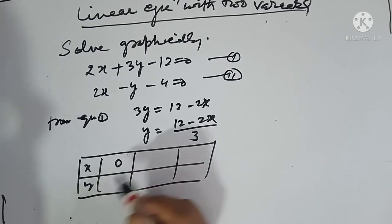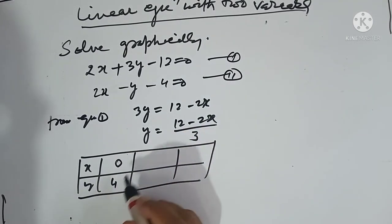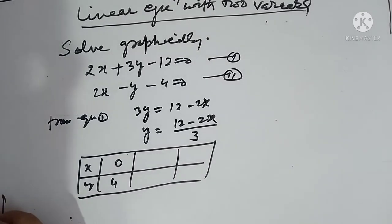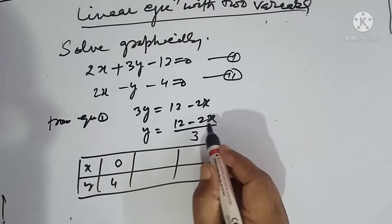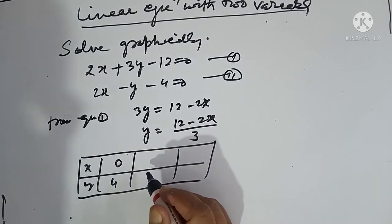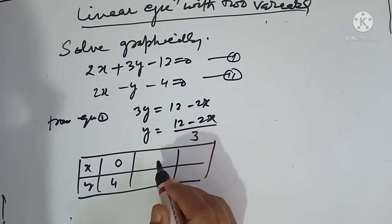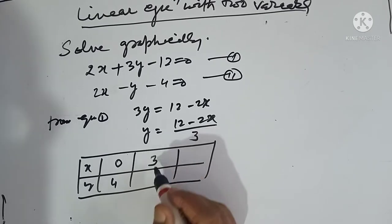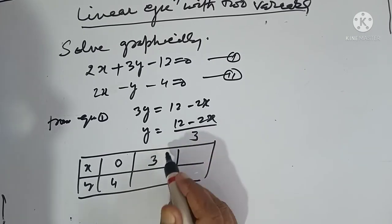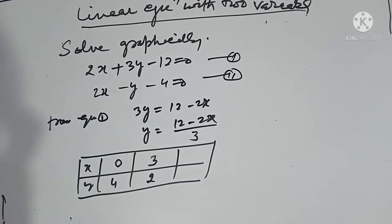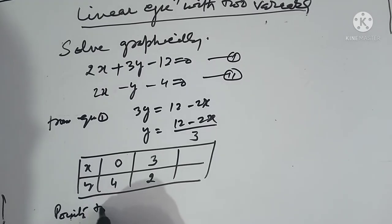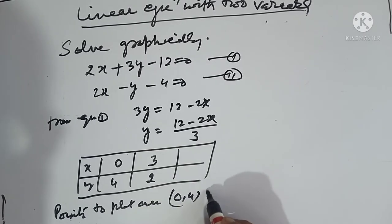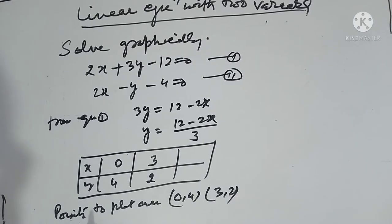Let x equal 0, then y equals 4. Let x equal 3, then y equals 2, since 12 minus 6 equals 6, divided by 3 equals 2. The two points to plot from equation 1 are (0, 4) and (3, 2).